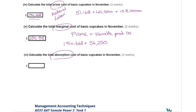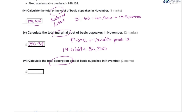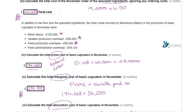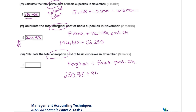Then we need the total absorption costing. Under absorption costing it's the marginal cost plus the fixed production overheads. We take our marginal cost of £250,918 and add the fixed production overhead of £96,326, giving us £347,244 for the total absorption costing.